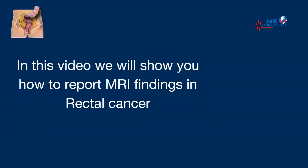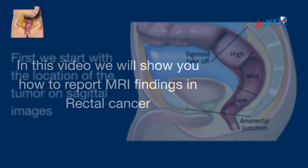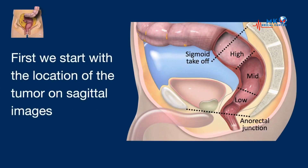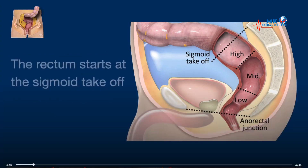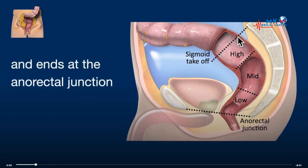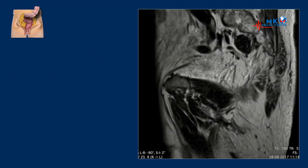In this video we will show you how to report MRI findings in rectal cancer. First we start with location of the tumor on sagittal images. The rectum starts at the sigmoid takeoff and it ends at the anorectal junction. So let's get started.